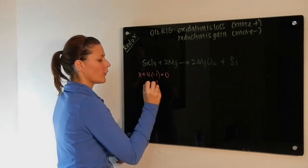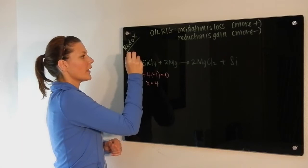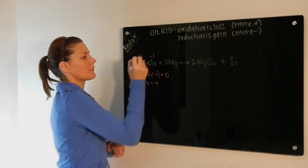You solve for X and you get a value of four. So silicon is a plus four oxidation number, and chlorine is minus one.